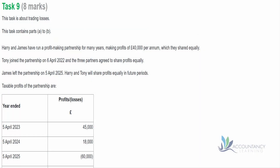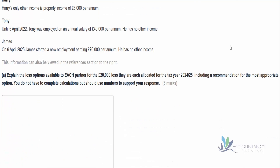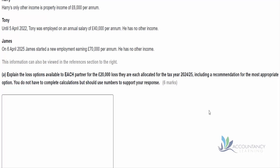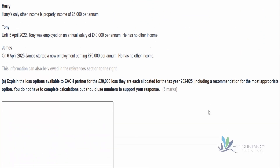This is Task 9 from the second AAT sample assessment for business tax. Task 9 is about trading losses. We need to explain the loss options available to each partner for the £20,000 loss they are each allocated for the year 2024 to 25, including a recommendation for the most appropriate option. We don't need to complete any calculations but should use numbers to support our response. There's a text box and also a couple of true/false statements to deal with afterwards.